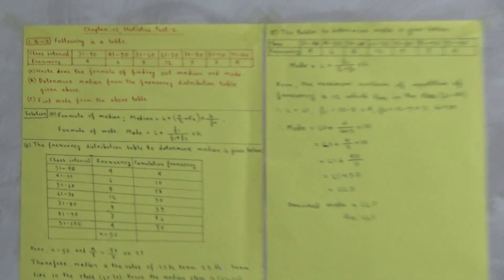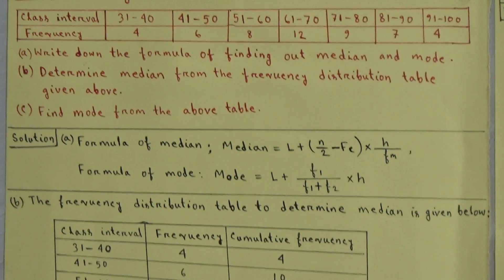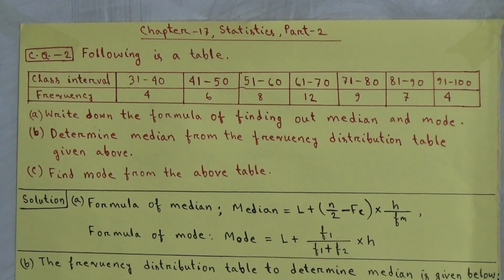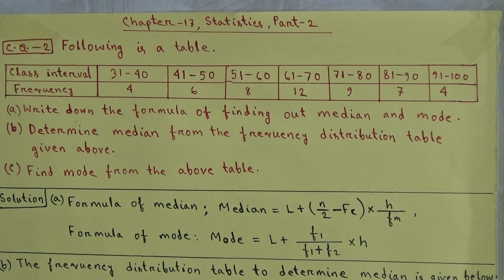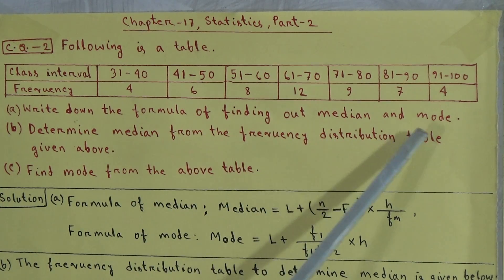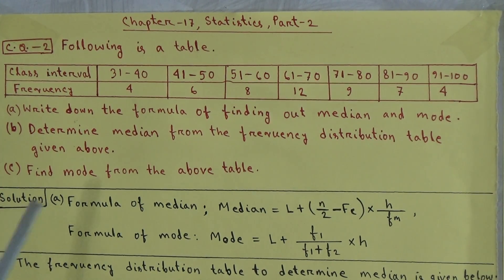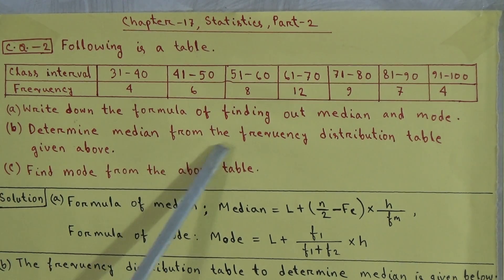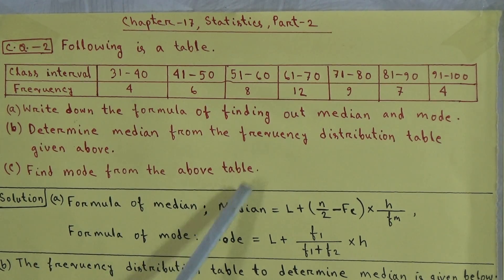In the previous class, we discussed about median. Today we will discuss about median and mode. This is lecture number 28 and homework assignment number 23. Today we will solve CQ2 from chapter 17. The questions are: A number — write down the formula of finding out median and mode; B number — determine median from the frequency distribution table given above; C number — find mode from the above table.